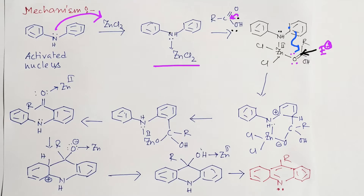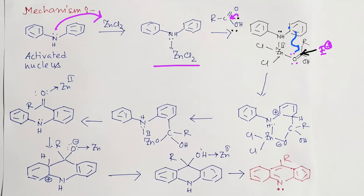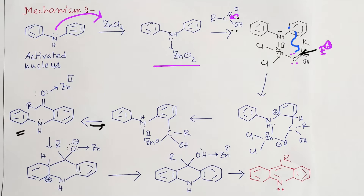Since aromaticity is destroyed by the attack, the proton is abstracted and aromaticity is regained. What we get at this point is actually a gem diol. Gem diols are not that much stable — as discussed previously — so this gem diol is instantly converted to the corresponding carbonyl. The keto form is energetically more stable compared to the enol or gem diol form.